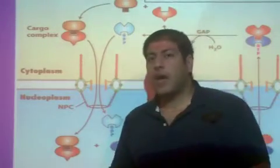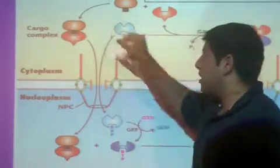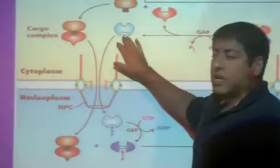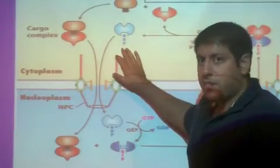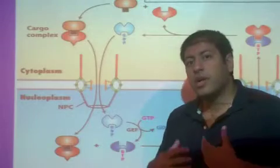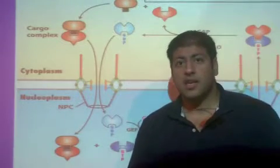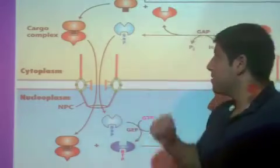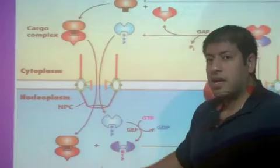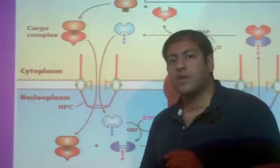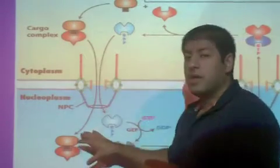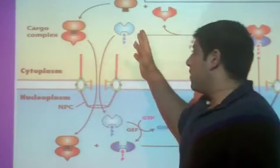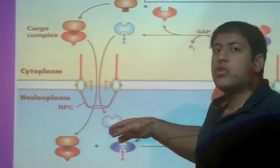At around the same time, there is a G protein also out in the cytoplasm called RAN, R-A-N. Now, RAN is represented here by this light blue structure. RAN is in the off state. So, when a G protein is in the off state, it has GDP bound to it. So, again, once the cargo complex, that is the protein destined for the nucleus plus importin, have come in, around the same time, the RAN protein, G protein, follows closely behind and it too comes into the nucleus.